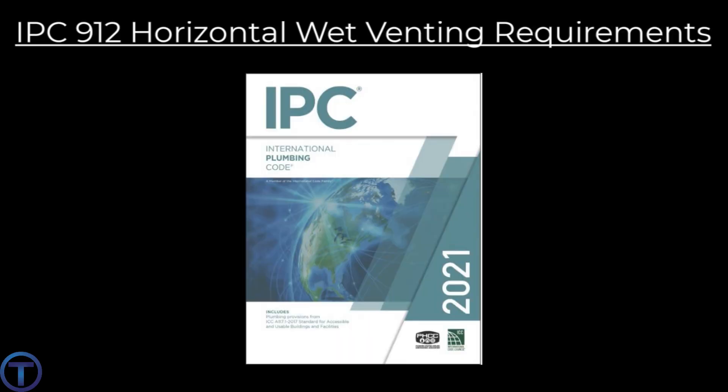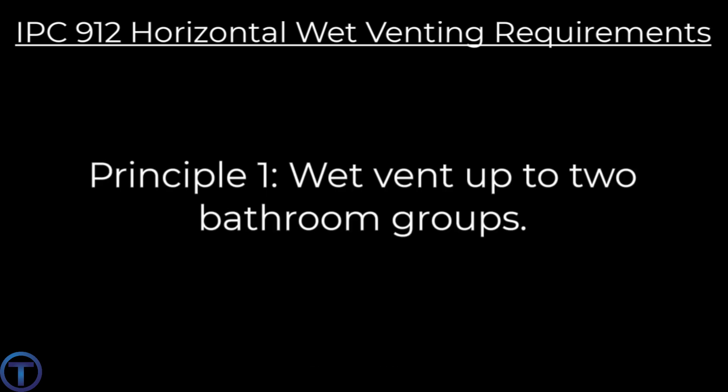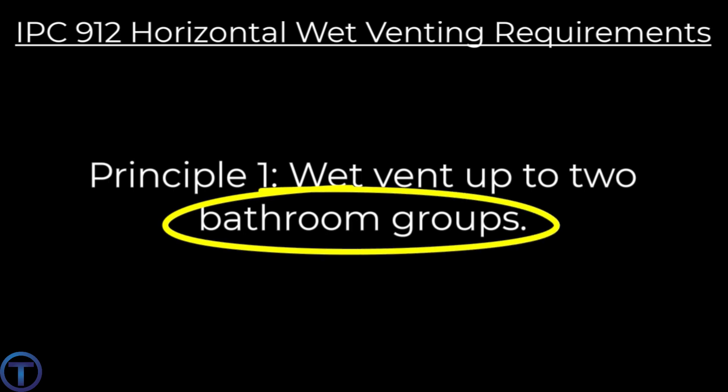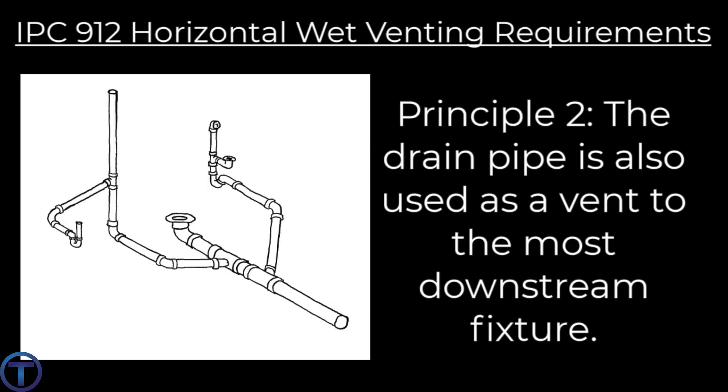Let's examine the principles for wet venting from the International Plumbing Code, section 912 on wet venting — particularly the horizontal wet vent. Horizontal wet vent principle one: a wet vent can serve up to two bathroom groups. Please remember that this limits the bathroom groups to bathroom group fixtures only.